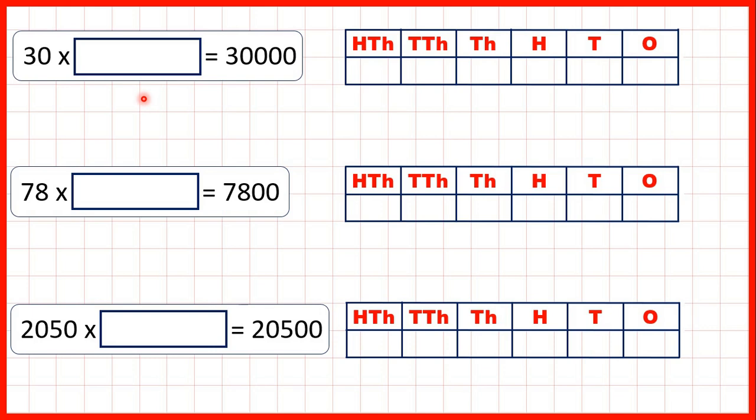Now, we need to solve missing number problems for multiplying by 10, 100, or 1000. And for these questions, we know that the missing number must be 10, 100, or 1000.